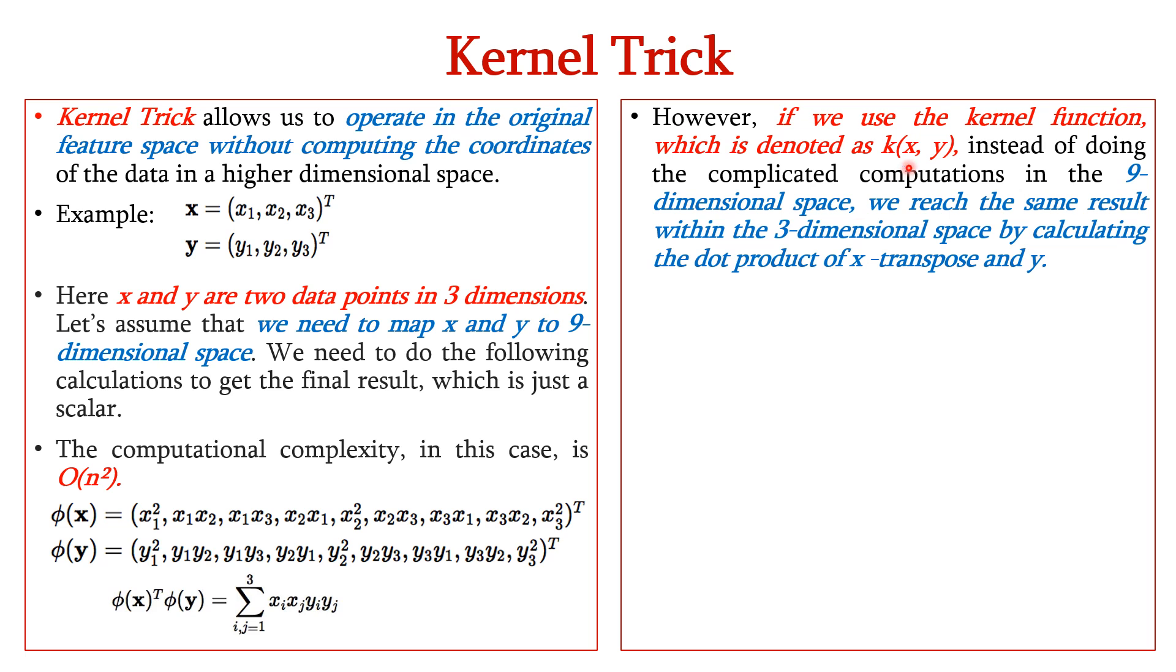However, if we use the kernel function which is denoted as k(x, y), instead of doing these complicated computations in the nine dimensional space, we reach the same result within the three dimensional space by calculating the dot product of xᵀ and y. So, the kernel function is represented as (xᵀ·y)² which can be written as (x1·y1 + x2·y2 + x3·y3)².